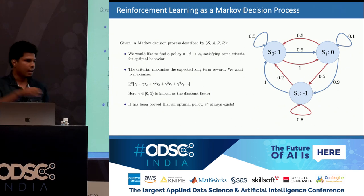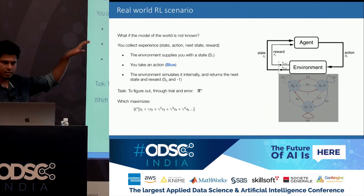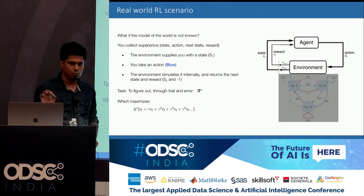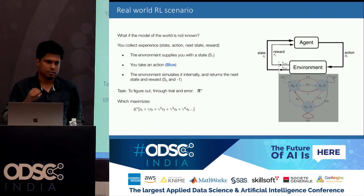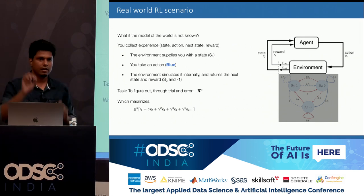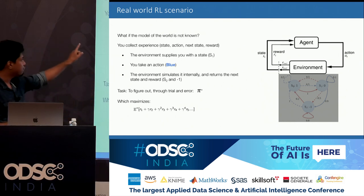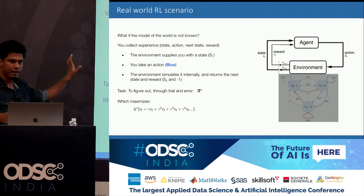The good news is that for an MDP, an optimal policy always exists. In the real world, the agent doesn't have access to the full MDP. The only things the agent knows are: I am in this state and I can take these actions. The goal of this agent is to collect experience from the environment. The agent says: I am in this state, I am taking this action. The environment simulates it internally and returns the next state and reward back to the agent. This four-tuple of state, action, next state, and reward is called the experience gained by the agent.